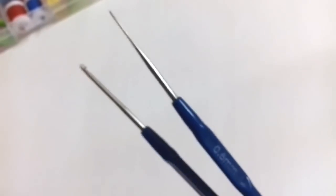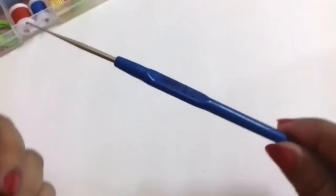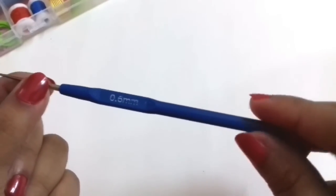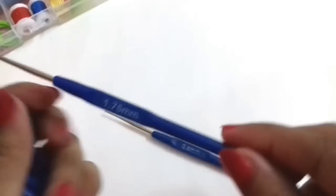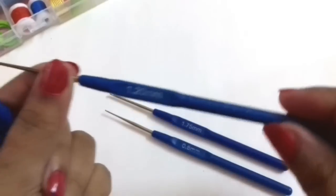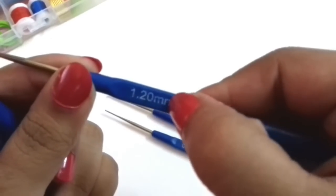These are the 2 crochet hooks, the smallest one and the biggest one. This is 0.6 mm, 1.75 mm, 1.20 mm. It seems that the numbers could get wiped off after some time.